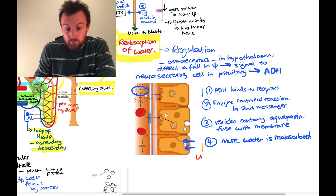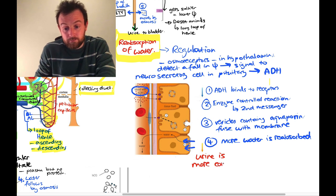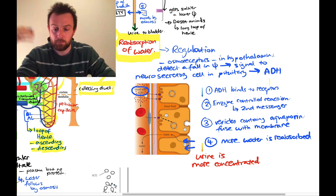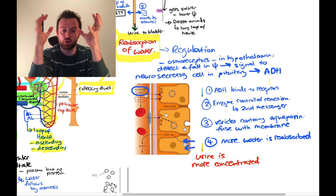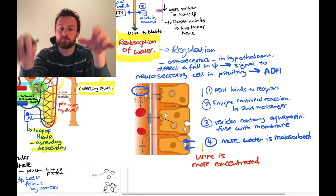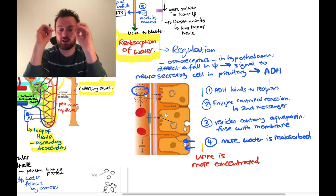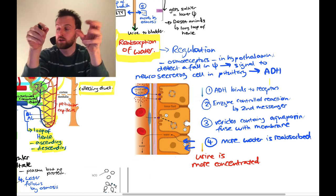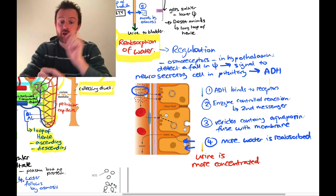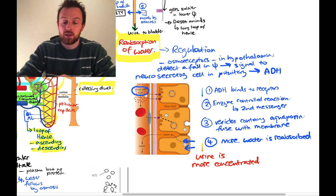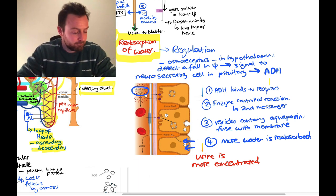The end result is that urine becomes more concentrated. If there's a fall in water potential in the blood — the blood is getting more salty, less watery — the osmoreceptors detect it, trigger production of ADH by neurosecretory cells. ADH increases the number of aquaporin proteins in the cell surface membrane of cells lining the collecting duct so that more water moves back into the blood.